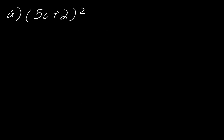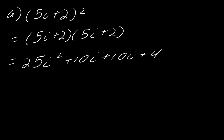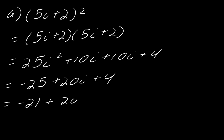Now let's talk about this example. What do you do when you are squaring this? You have to actually rewrite it as 5i plus 2 times itself — that's what it means to square this — and then FOIL it out again. After I do that, this becomes 25i squared plus 10i plus 10i plus 4. I keep working this out: I get negative 25 plus 20i plus 4, giving me negative 21 plus 20i.